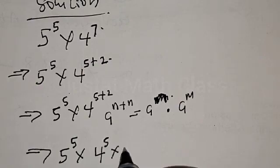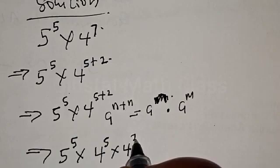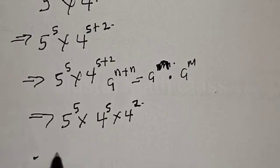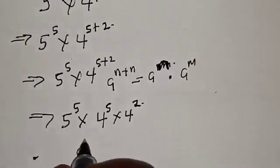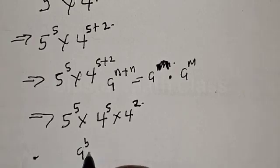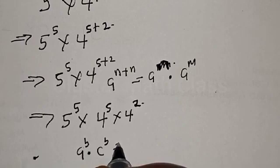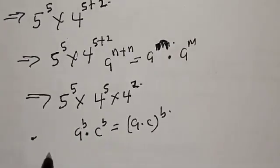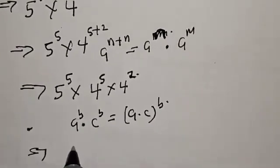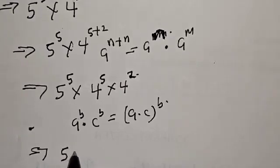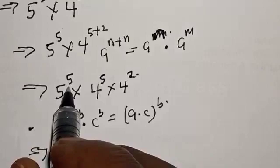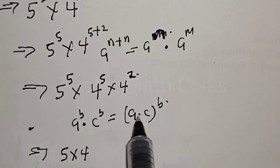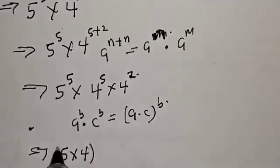Since 5 raised to power 5 and 4 raised to power 5 have the same exponent, we can combine them. With a equal to 5 and b equal to 4, we get 5 times 4 raised to power 5, which gives us 20 raised to power 5.